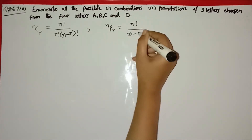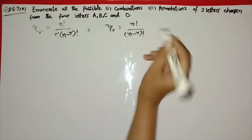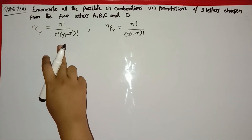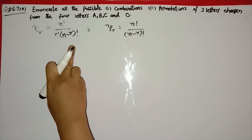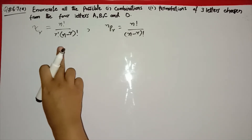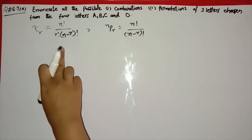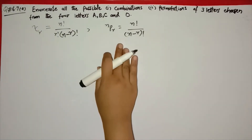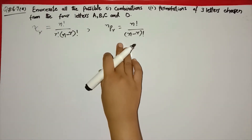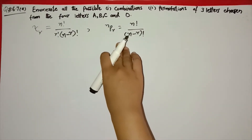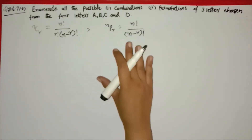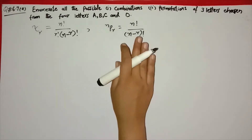In combinations, we choose a subset of r objects without regard to their order — we choose randomly. In permutations, we have an ordered subset of r objects chosen from n distinct objects. Here we find out all possible combinations.